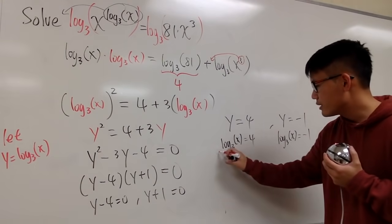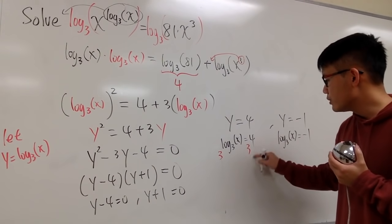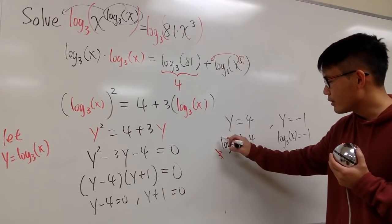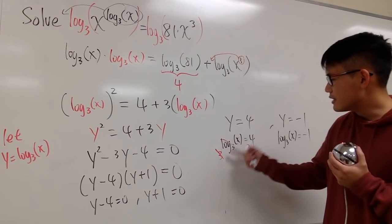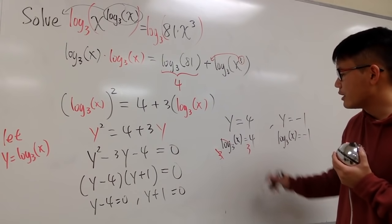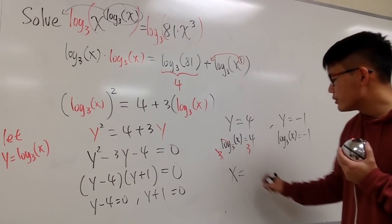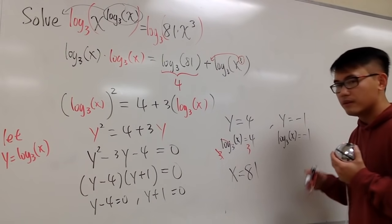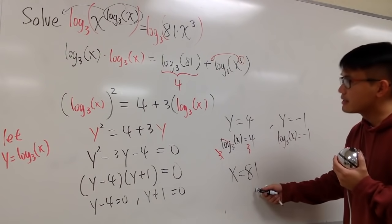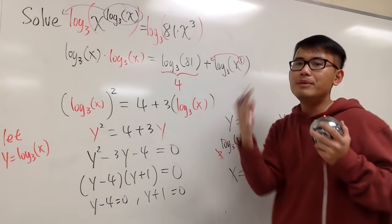What do we do? We take 3 to that power, we take 3 to that power, so that they cancel. We pretend both sides are the exponents, so this is the same thing. 3 to this power and 3 to that power. Finally, we get x equals to 3 to the fourth power is 81. First answer. And you should plug this back into the original. Let me tell you, it works.